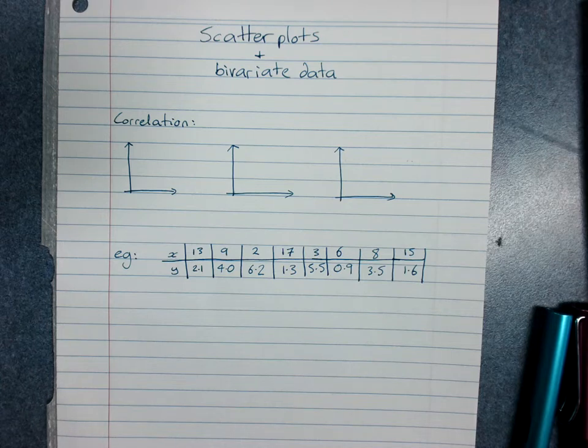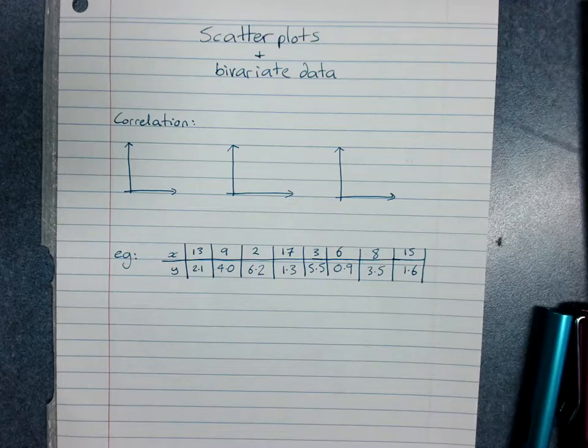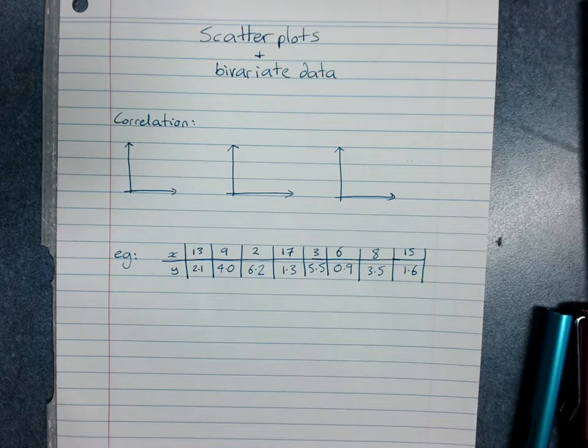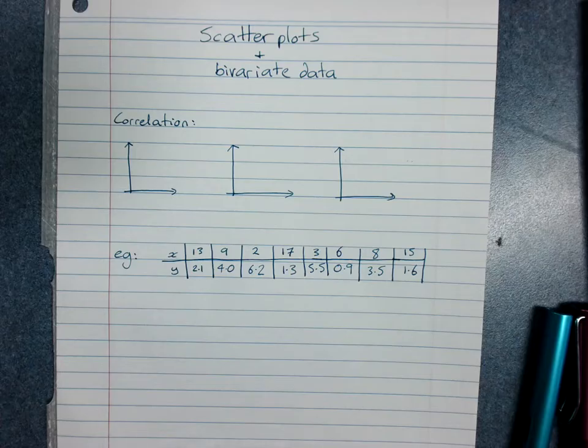Scatter plots and bivariate data. Bivariate data is when we collect information about two variables, and usually it's two responses from two questions you ask to one person or of one thing.